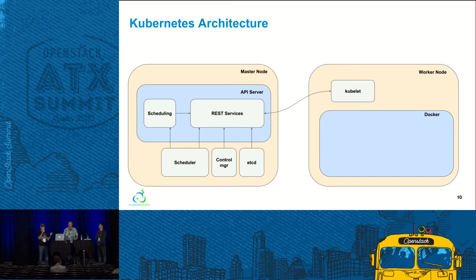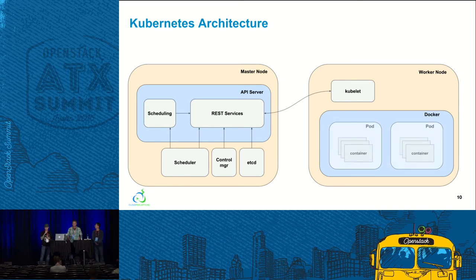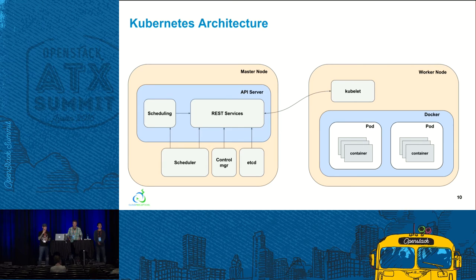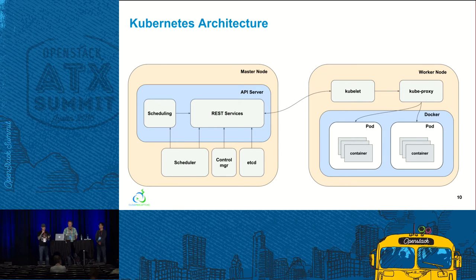Docker is the container runtime engine, running on every node and handling downloading and running containers — controlled locally by the kubelet. Pods are the basic unit Kubernetes deals with: containers are grouped together as pods, where a pod generally represents one or more containers controlled as a single application. Kube-proxy is responsible for forwarding requests to the correct containers, can do primitive load balancing, and ensures the networking environment is both predictable and accessible while remaining isolated.